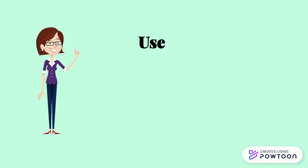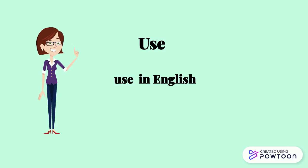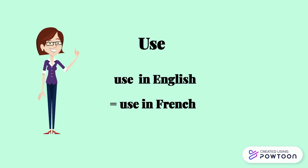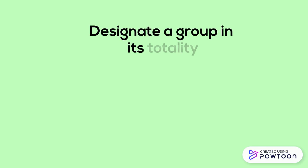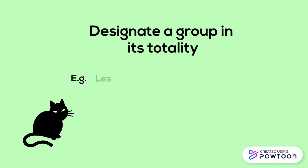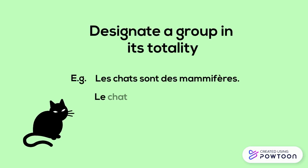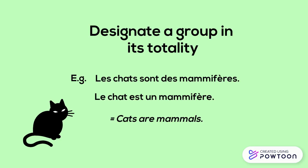French uses the definite article much more than English does. Accordingly, every time you use the definite article in English you will probably need it in French, but you will use it in other situations as well — for example, to designate a group in its totality. If you say les chats sont des mammifères, or le chat est un mammifère — 'cats are mammals' — you don't use any article in English, but you do in French.